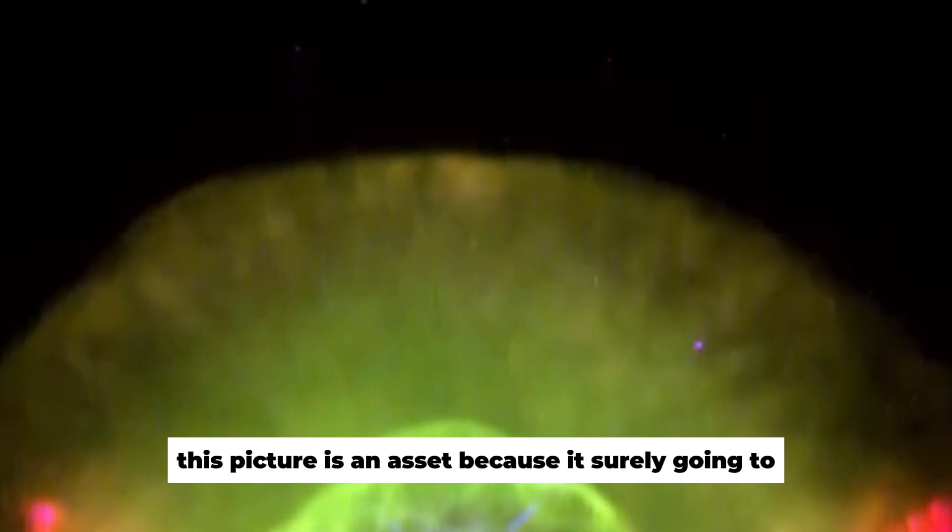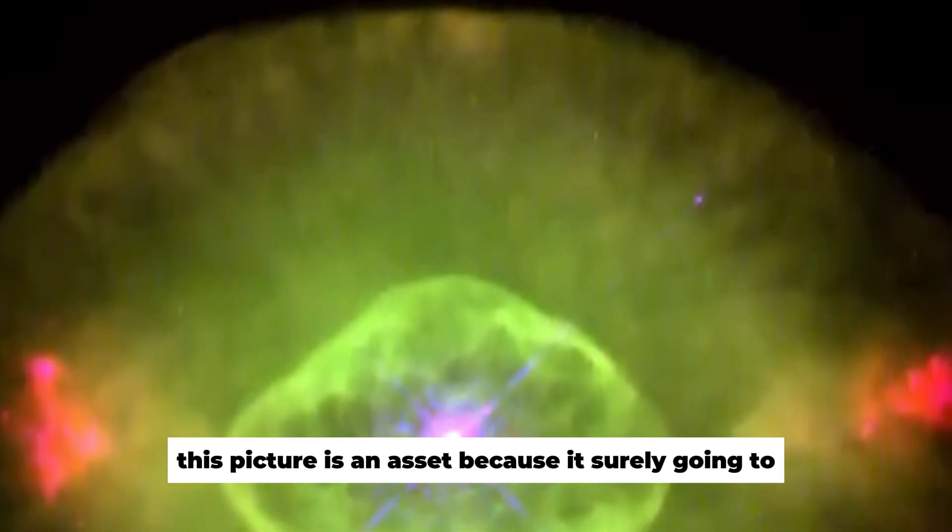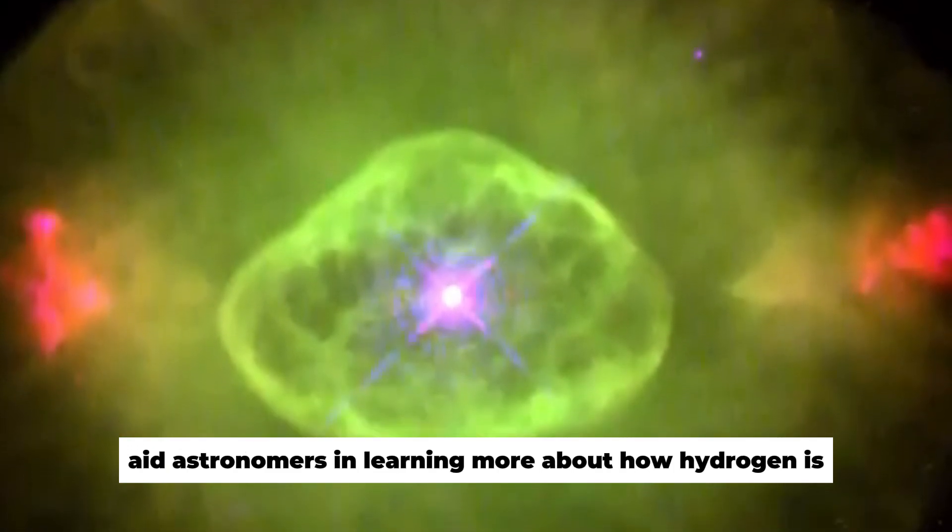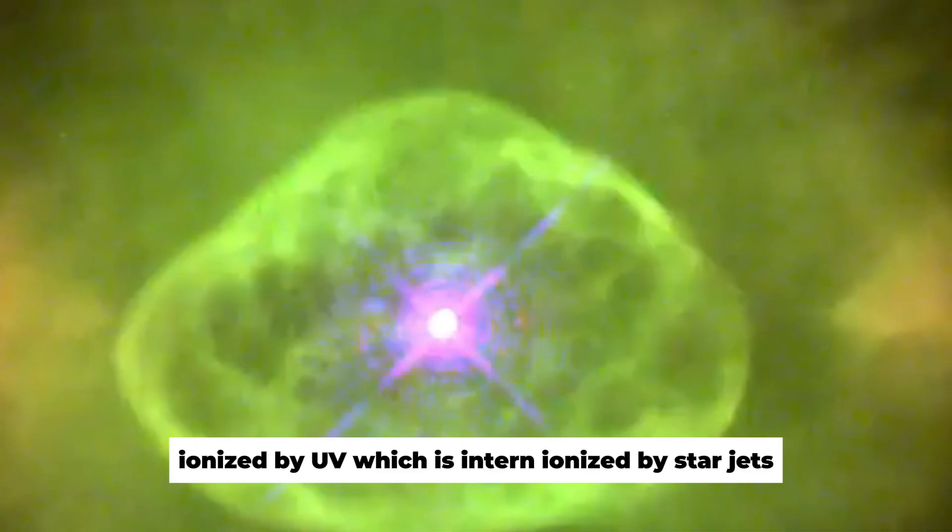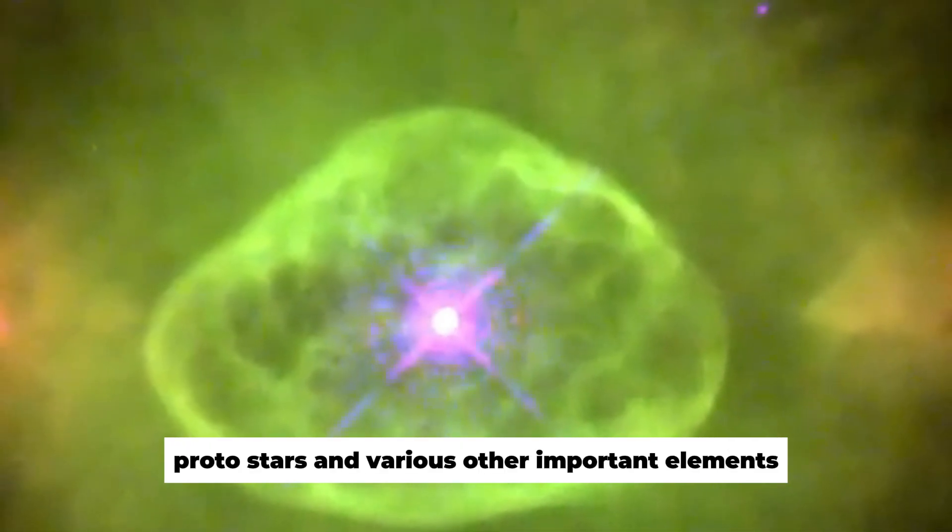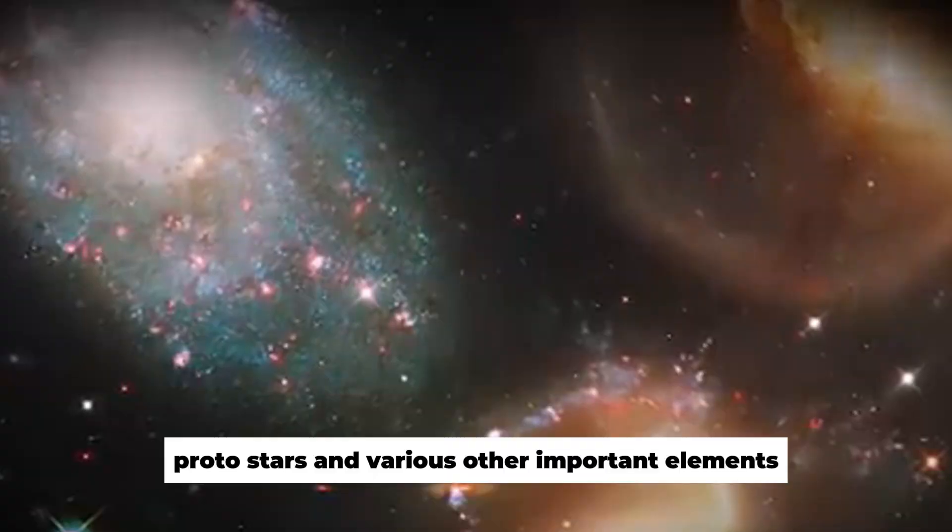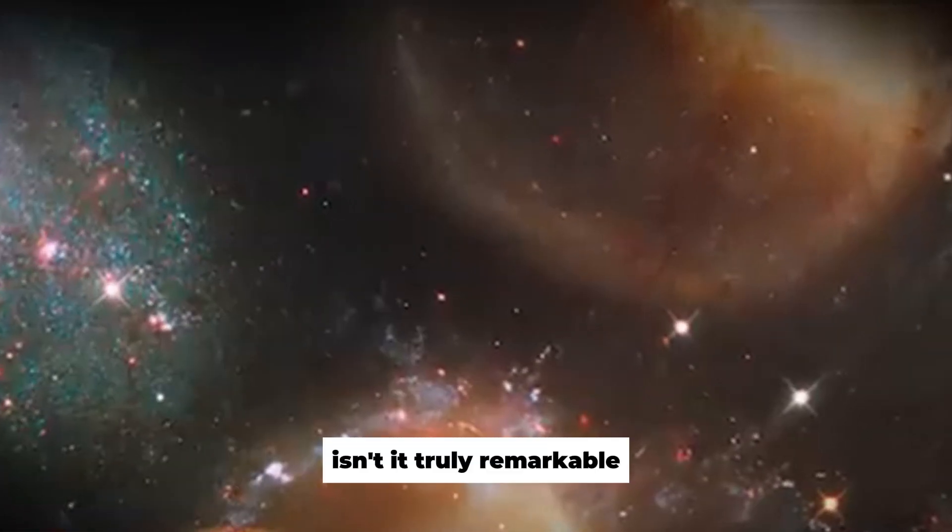This picture is an asset because it's surely going to aid astronomers in learning more about how hydrogen is ionized by UV, which is in turn ionized by star jets, protostars, and various other important elements. Isn't it truly remarkable?